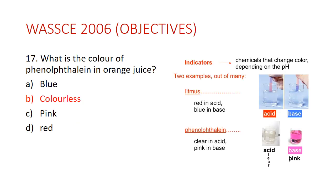Question seventeen: what is the color of phenolphthalein in orange juice? The answer is colorless. Orange juice is acidic, and phenolphthalein is colorless in an acidic medium. As shown in the diagram, phenolphthalein appears clear in acid — that is how this indicator behaves.